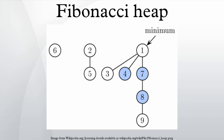Compared with binomial heaps, the structure of a Fibonacci heap is more flexible. The trees do not have a prescribed shape and in the extreme case the heap can have every element in a separate tree. This flexibility allows some operations to be executed in a lazy manner, postponing the work for later operations. For example, merging heaps is done simply by concatenating the two lists of trees, and operation decrease key sometimes cuts a node from its parent and forms a new tree.